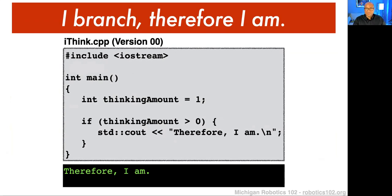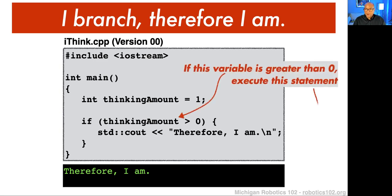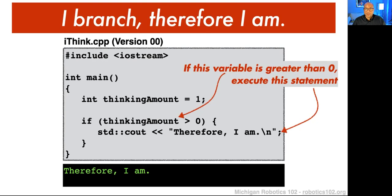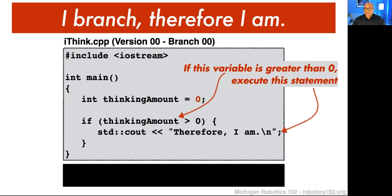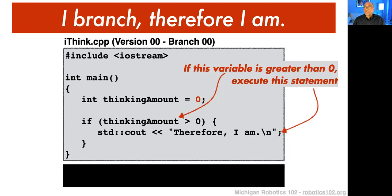Then I have this if statement that is looking at the variable and deciding that if that variable is greater than zero, then I can execute this statement. So there's a decision being made — the program is making a choice about whether to print the statement out or not. If I change the amount that I'm thinking to zero, when I run the program it's not going to print that out. So the if statement gives our program the ability to make decisions about whether to do something.